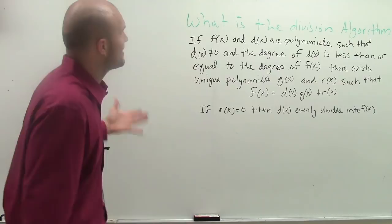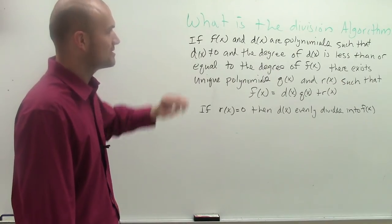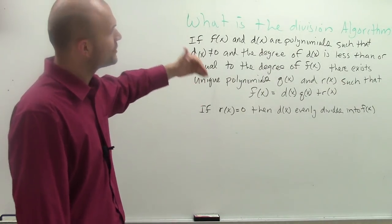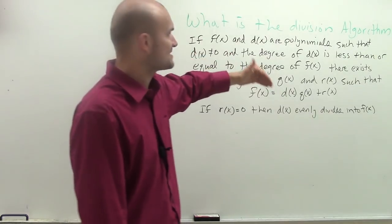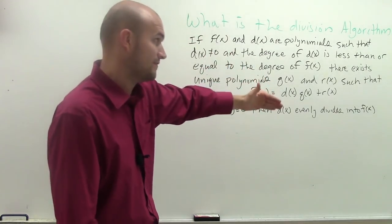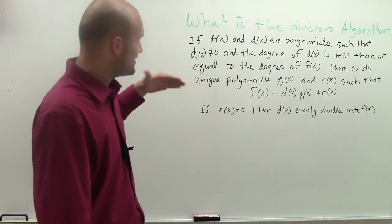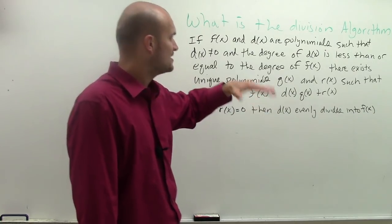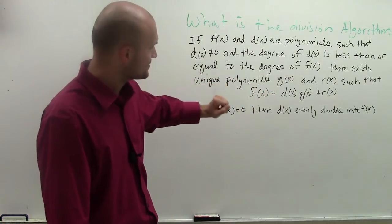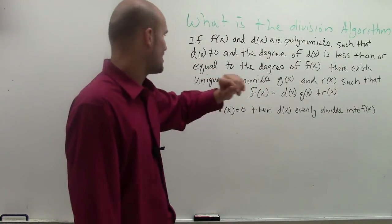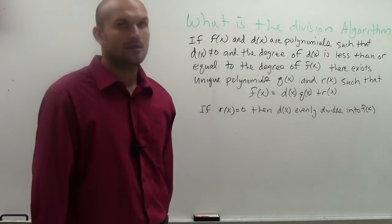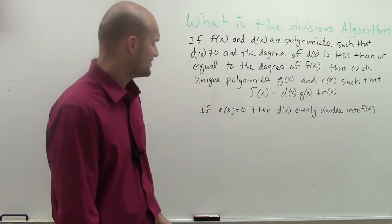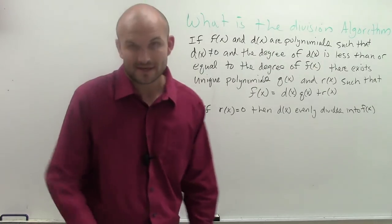So it says: if f of x and d of x are polynomials, such that d of x cannot equal 0, and the degree of d of x is less than or equal to the degree of f of x, there exist unique polynomials q of x and r of x, such that f of x equals d of x times q of x plus r of x. If r of x equals 0, then d of x evenly divides into f of x.